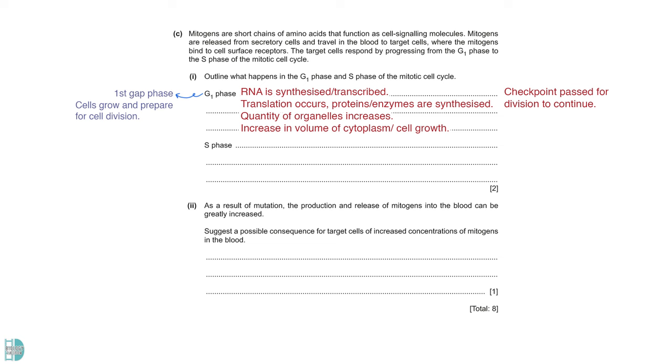The S phase is the synthesis phase. It is when DNA replication occurs. So, new DNA is synthesized. This leads to the doubling of the mass or number of strands of DNA. After this, each chromosome will be comprised of two chromatids.